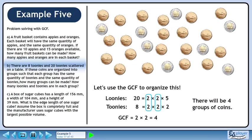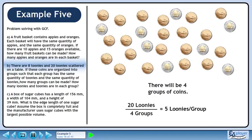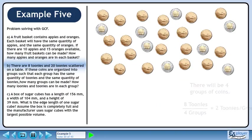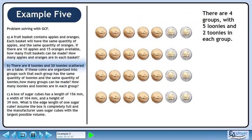There will be 4 groups of coins. 20 loonies divided into 4 groups gives 5 loonies per group. 8 toonies divided into 4 groups give 2 toonies per group. There are 4 groups with 5 loonies and 2 toonies in each group.